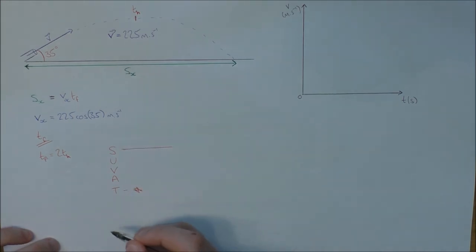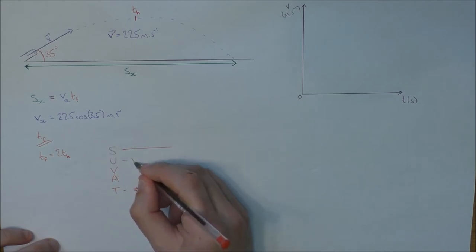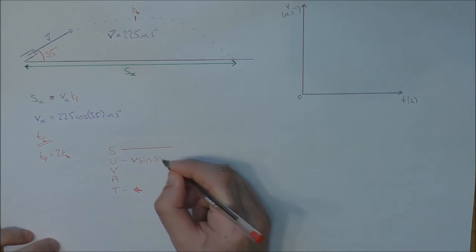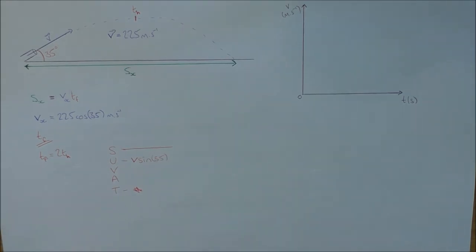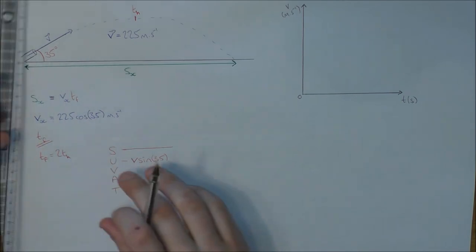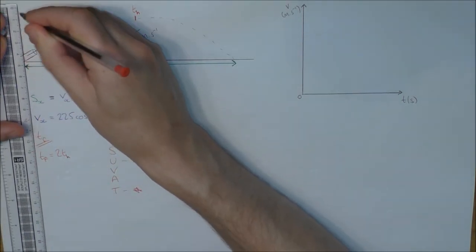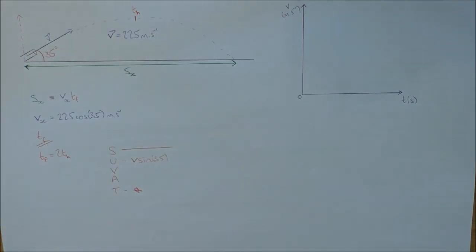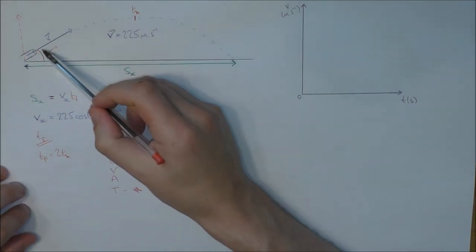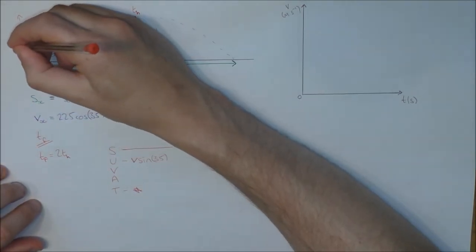I know that U though, the beginning velocity, I know that that is V sine 35, from the idea that up here...